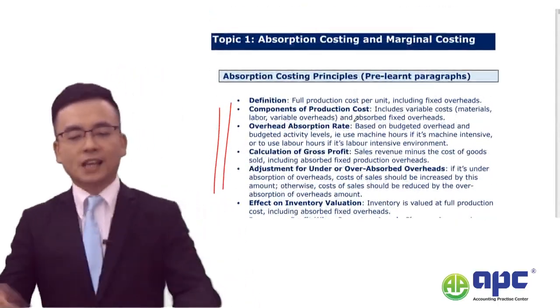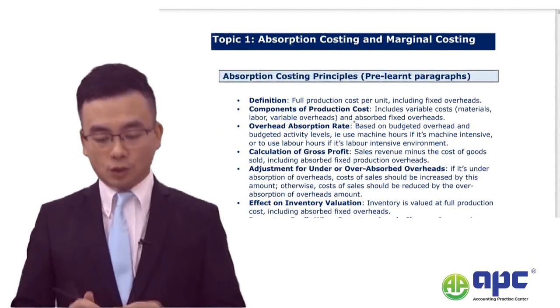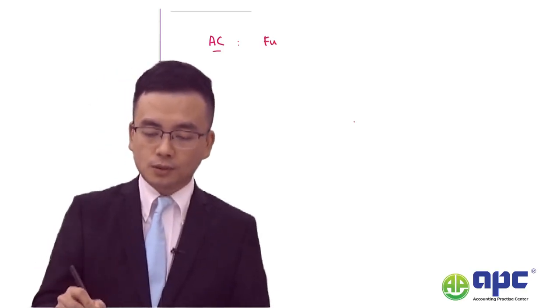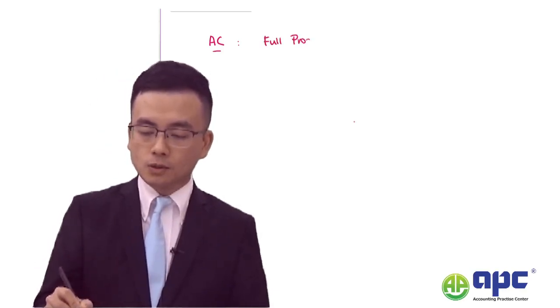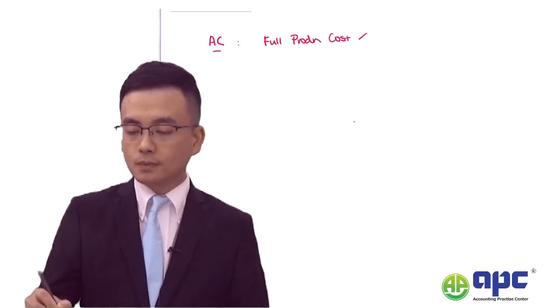Let's get started with topic one about absorption costing and marginal costing. Absorption costing, or AC, is very straightforward because this method will establish the full production costs of a particular product.